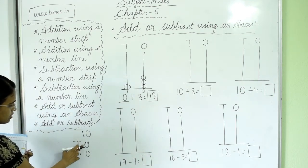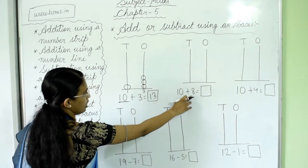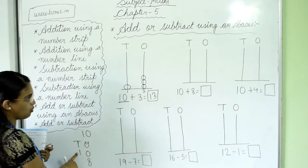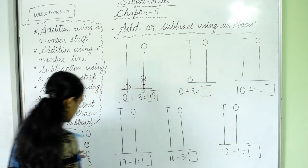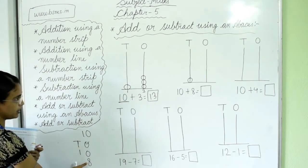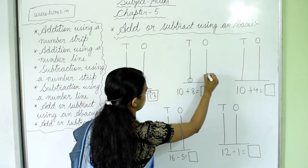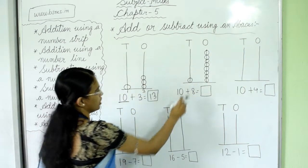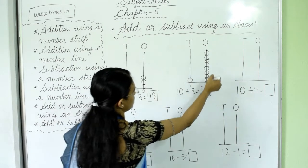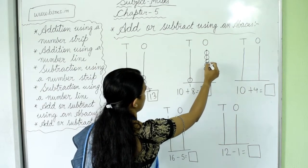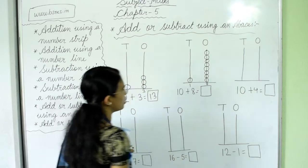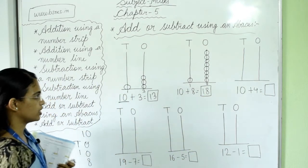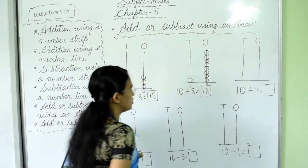Next question is 10 plus 8. One is in tens place and zero in ones place. We add 8, which is a one-digit number, so put 8 in ones place. Draw one bead in tens place and eight beads in ones place: 1, 2, 3, 4, 5, 6, 7, 8. So 10 plus 8 equals 18.